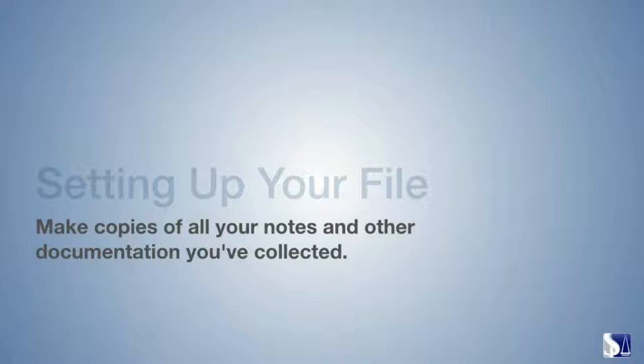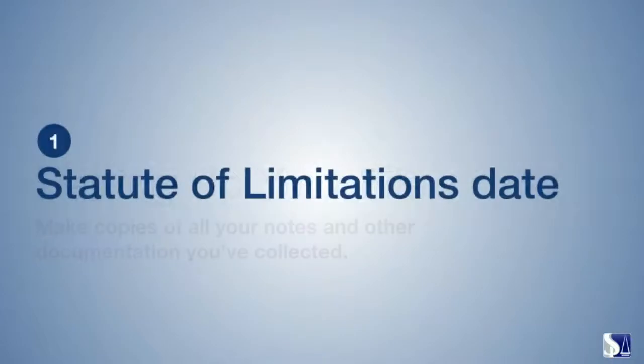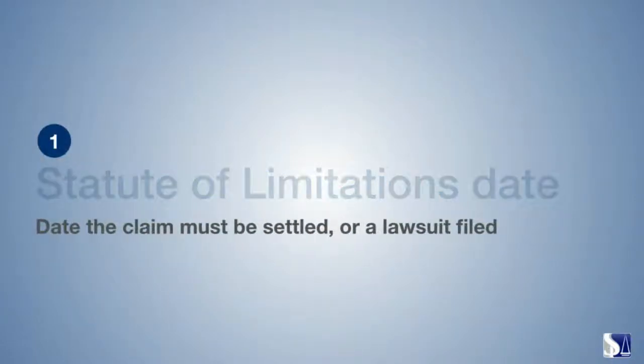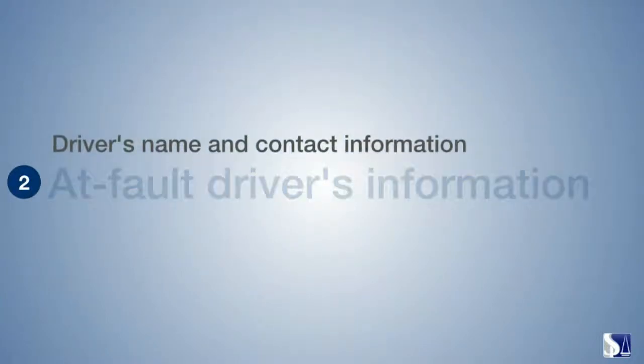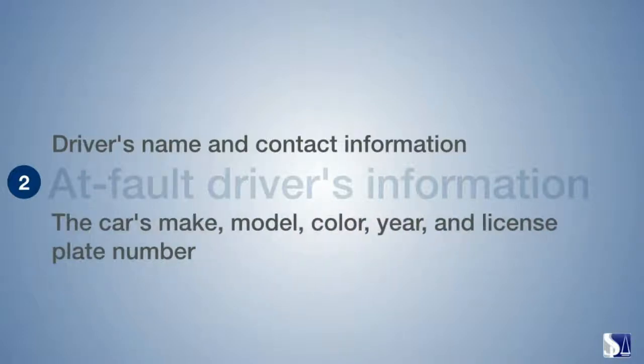The following are the 15 sections where you should file your documents. Section one, statute of limitation state, date the claim must be settled or a lawsuit filed. Section two, at fault driver's information: driver's name and contact information, the car's make, model, color, year and license plate number.